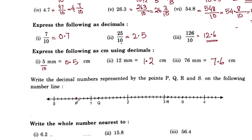Here we have point P. We have to write the decimal numbers. The decimal numbers on the number line are 0.1, 0.2, 0.3, 0.4, 0.5, 0.6, 0.7, 0.8, 0.9.